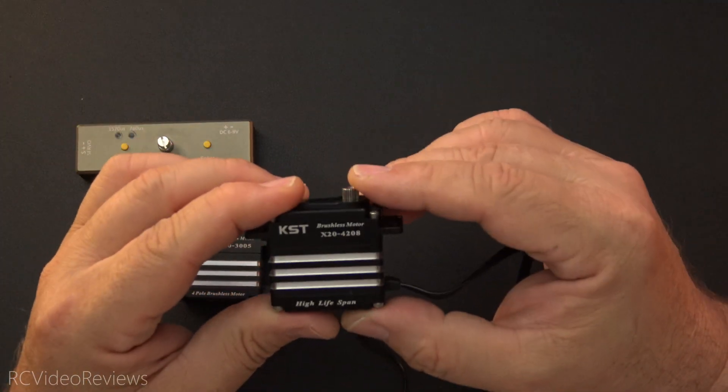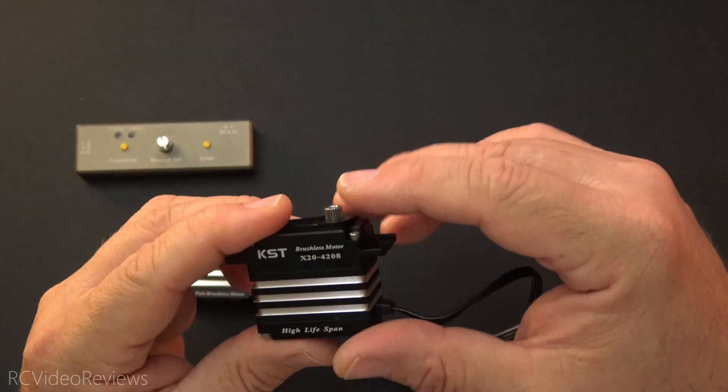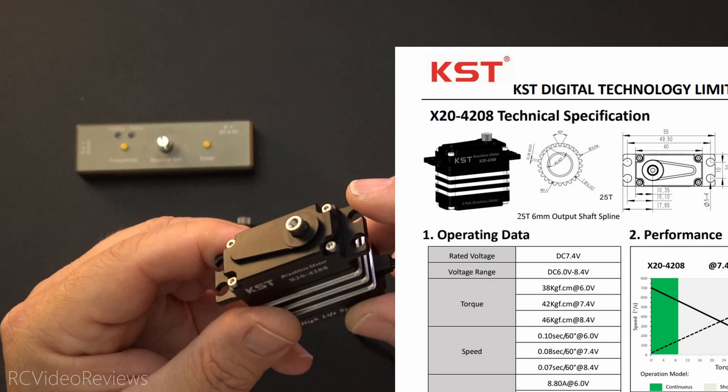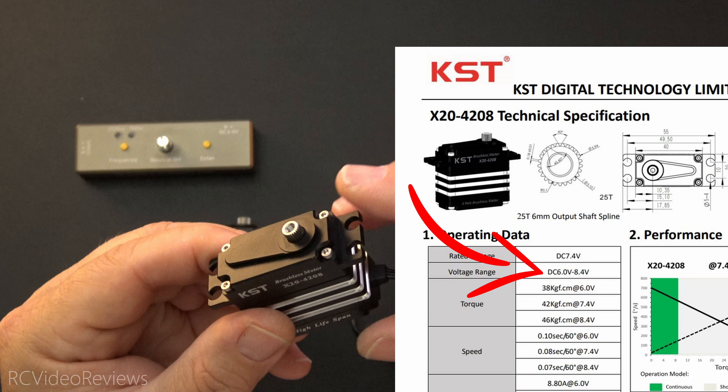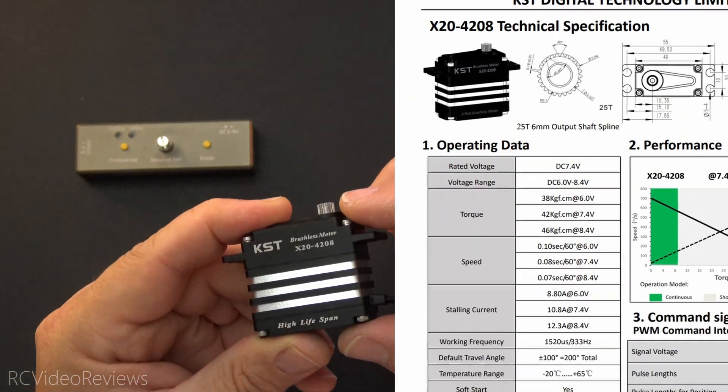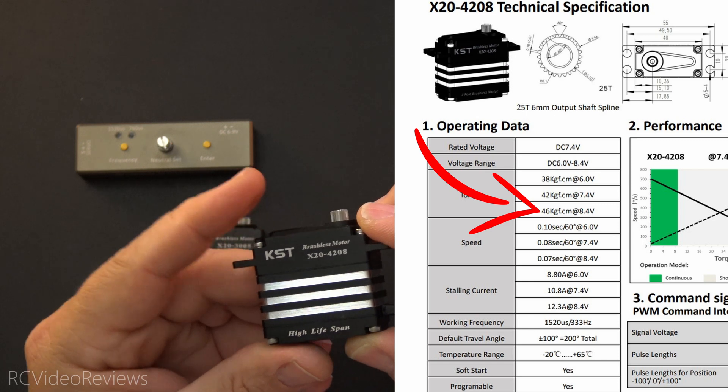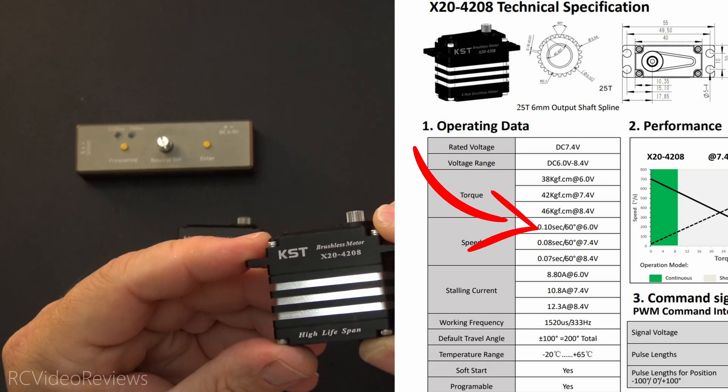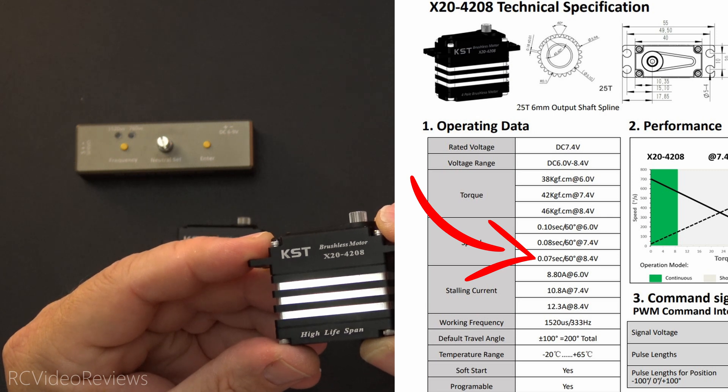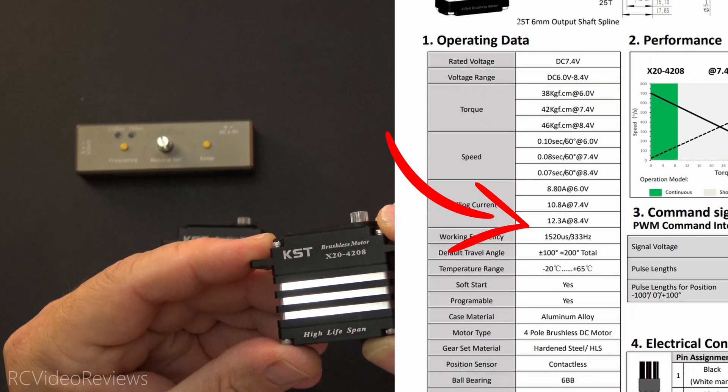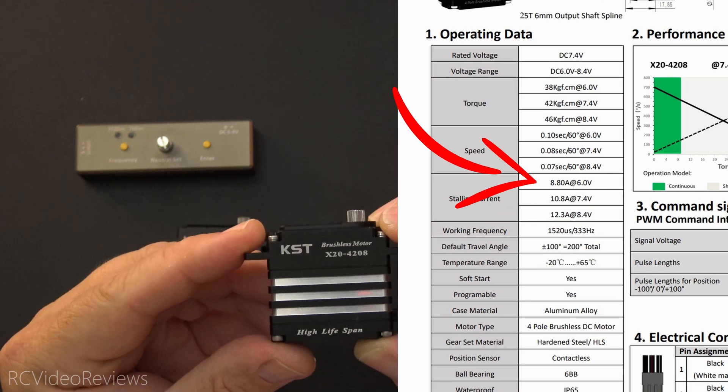First up is the X20 4208, and this is one powerhouse of a servo. It's got a rated voltage of 7.4, but it's got a range of 6 to 8.4 volts. At 8.4 volts, it's got 46 kilogram force per centimeter, so very stout servo. They're pretty quick too, at 0.07 seconds for 60 degrees of travel. Stall current is 12.3 amps on the high end and 8.8 amps on the low end. It's got a working frequency of 1520 microseconds at 333 hertz.